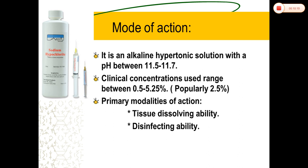Regarding its availability: sodium hypochlorite is available as an unbuffered solution at a high pH level. It is used at concentrations from 0.5% to 5.25%, but the most commonly used concentration is 2.5%. Coming to its mechanism of action: at body temperature, reactive chlorine in aqueous solution exists in two forms — hypochlorous acid (HOCl) and hypochlorite ion (OCl⁻), depending on the pH of the solution.